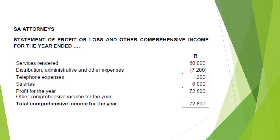If you now look at this example of the statement of profit or loss and other comprehensive income, you will see the income for the period reported on the top, followed by the expenses for the period. The profit for the year was calculated by deducting the expenses from the income. The profit for the year indicates the financial performance of the entity.